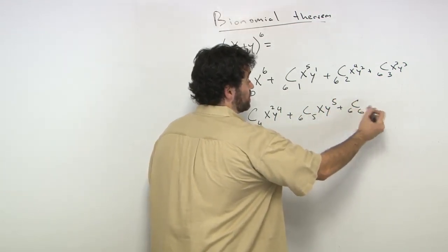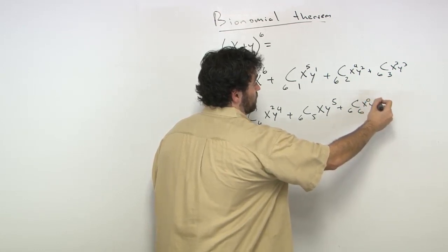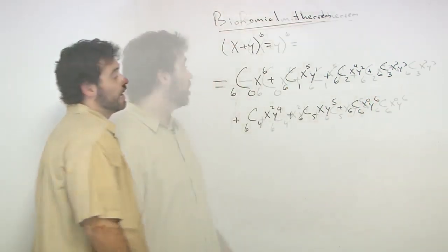Finally, 6c6, our last term, and that's going to give us x to the 0, y to the 6. x to the 0 is 1.